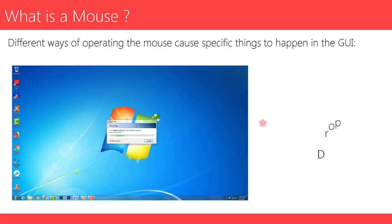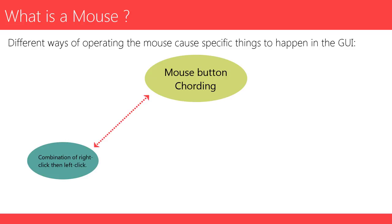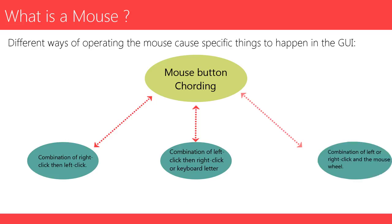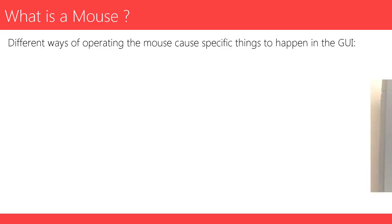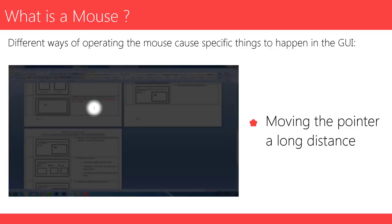Mouse button chording: combination of right click then left click, combination of left click then right click, or keyboard letter. Combination of left or right click and the mouse wheel. Clicking while holding down a modifier key. Moving the pointer a long distance.